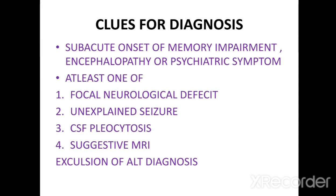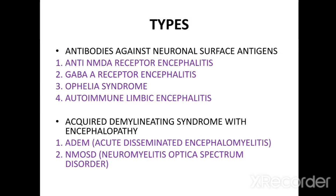When will you suspect a case of autoimmune encephalitis? When there is subacute onset of memory impairment, encephalopathy, or psychiatric symptoms along with one of four criteria: focal neurological deficit, unexplained seizure, CSF study showing pleocytosis, or MRI suggestive of autoimmune encephalitis, with exclusion of any alternative diagnosis.